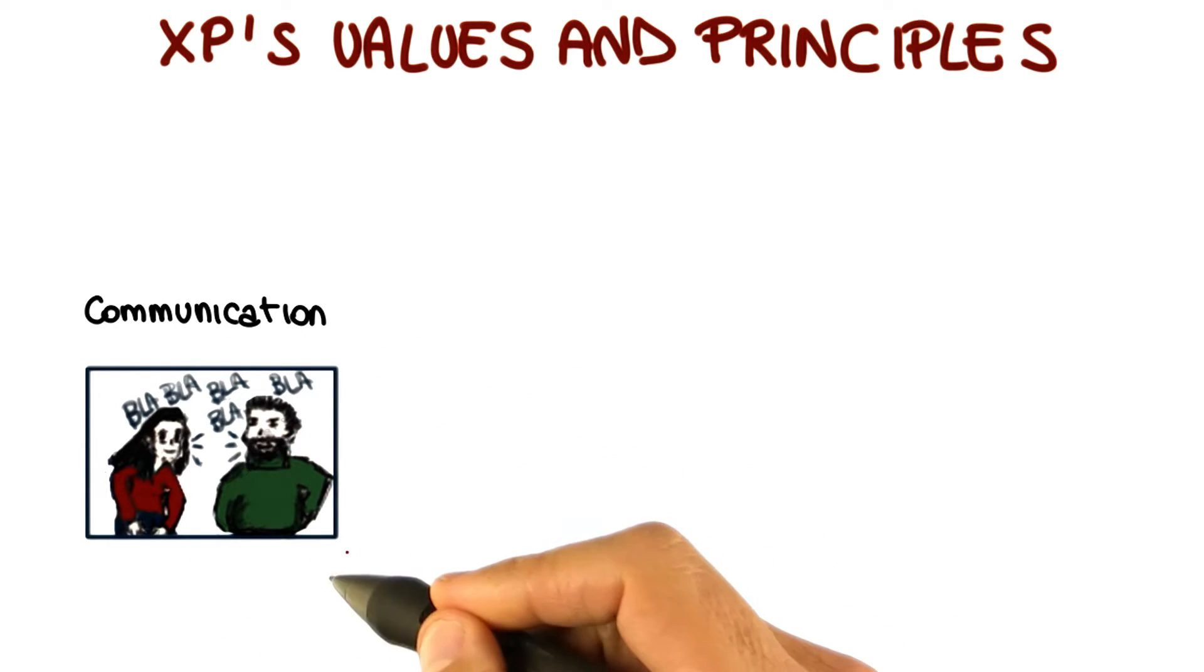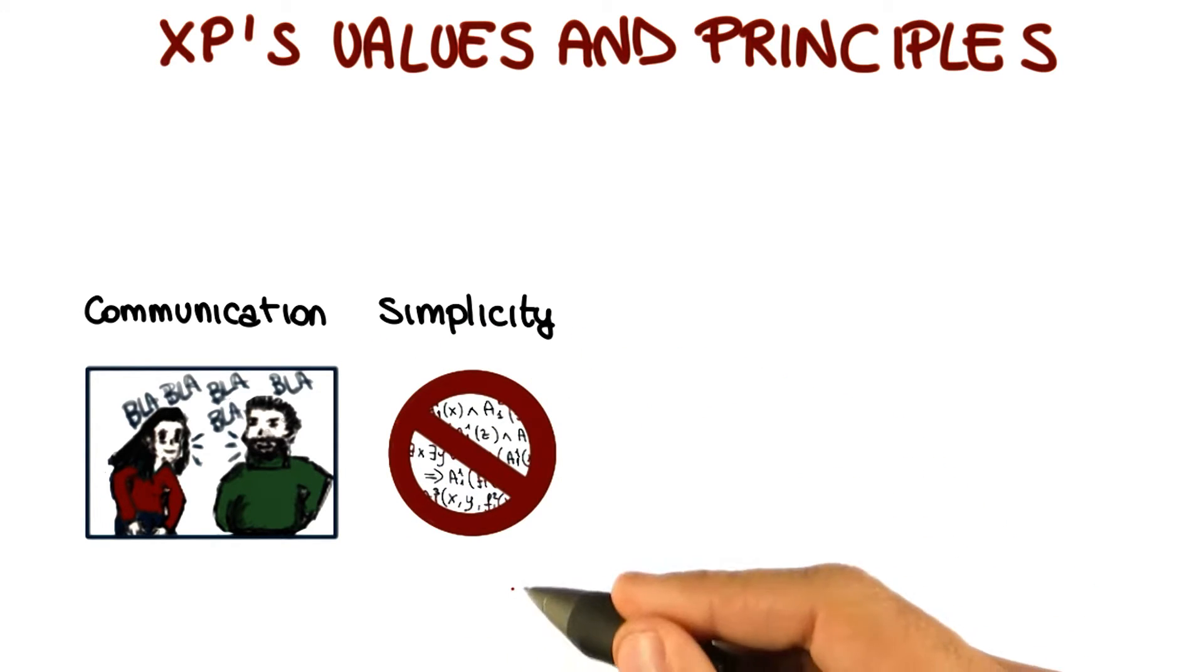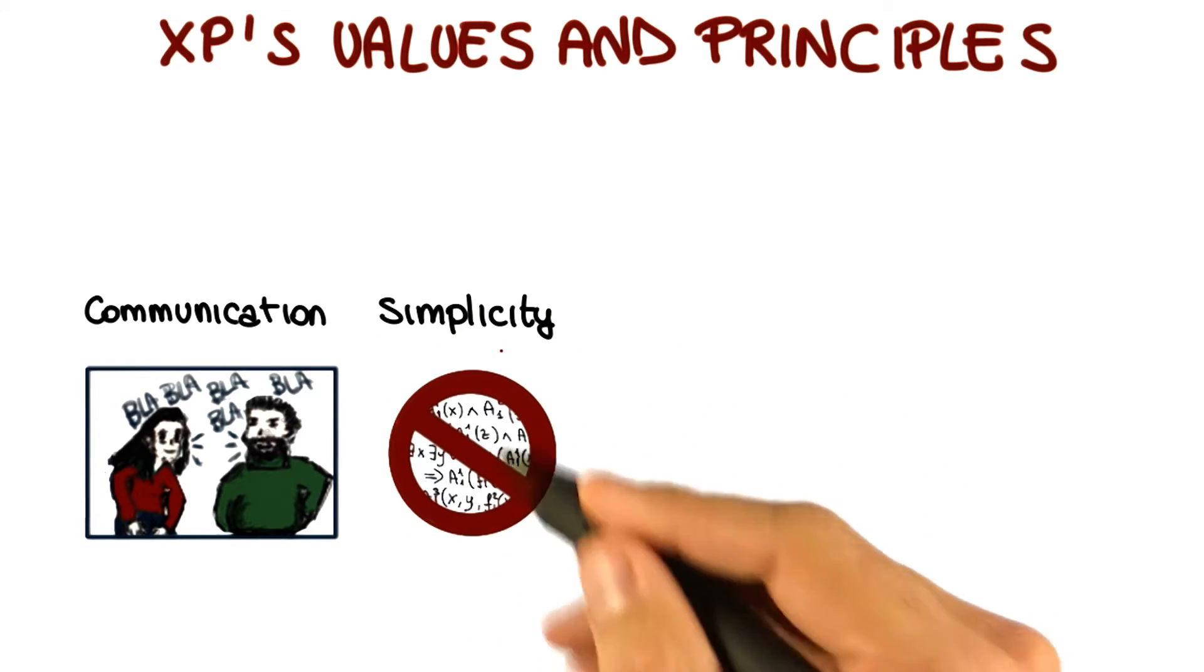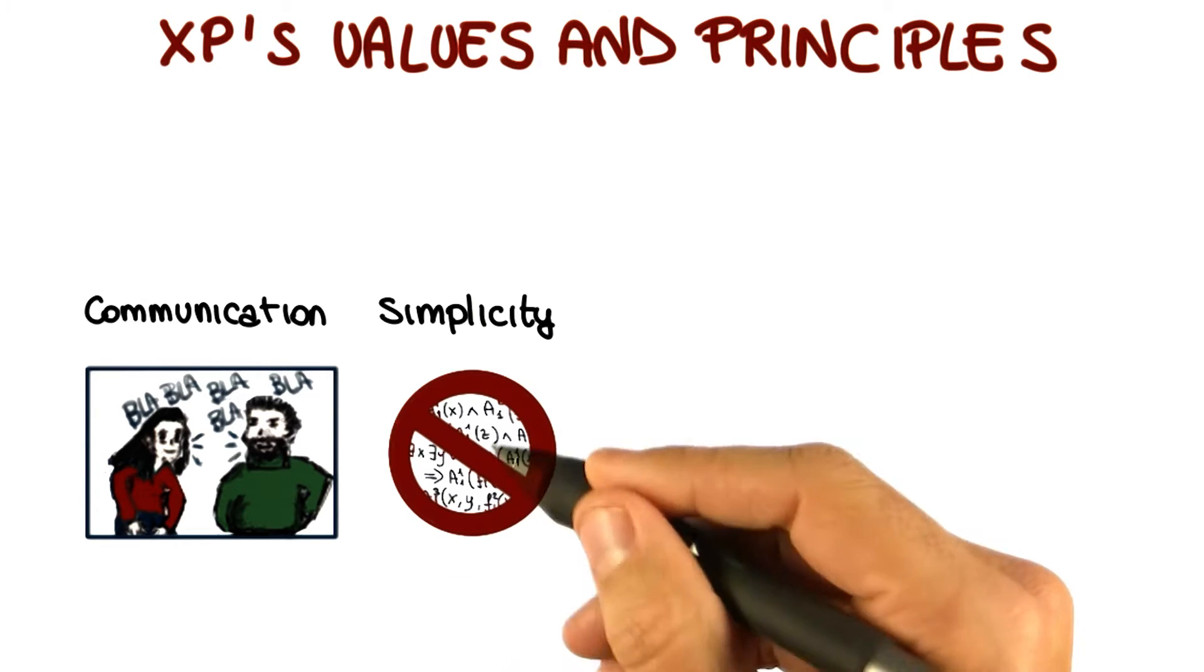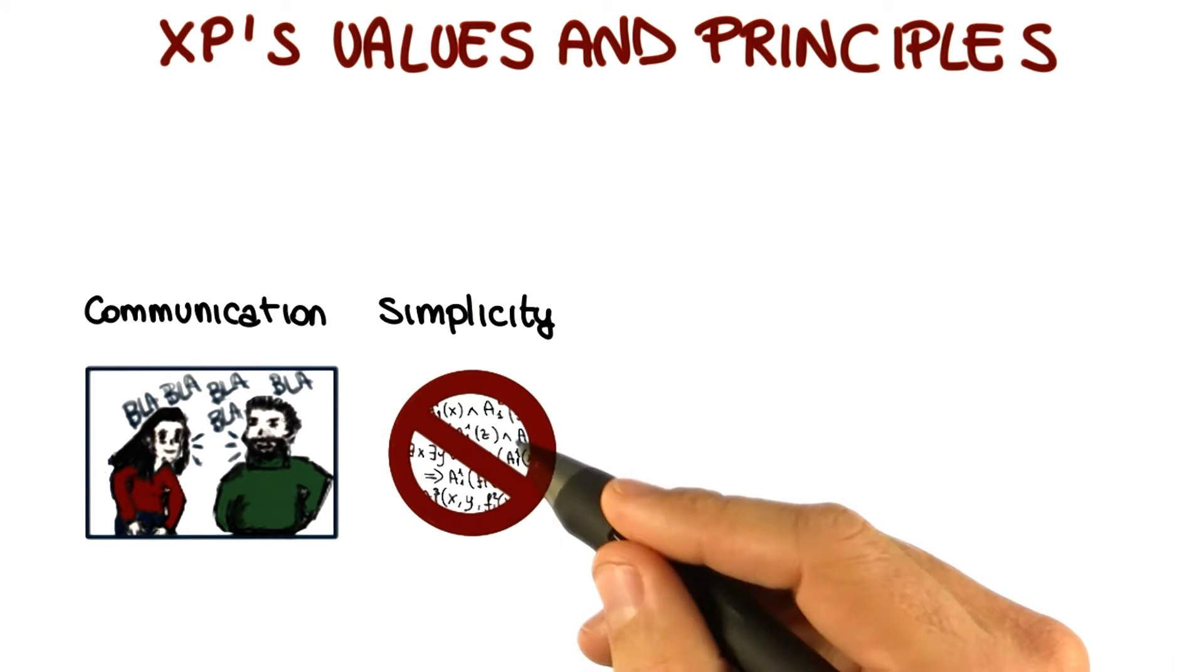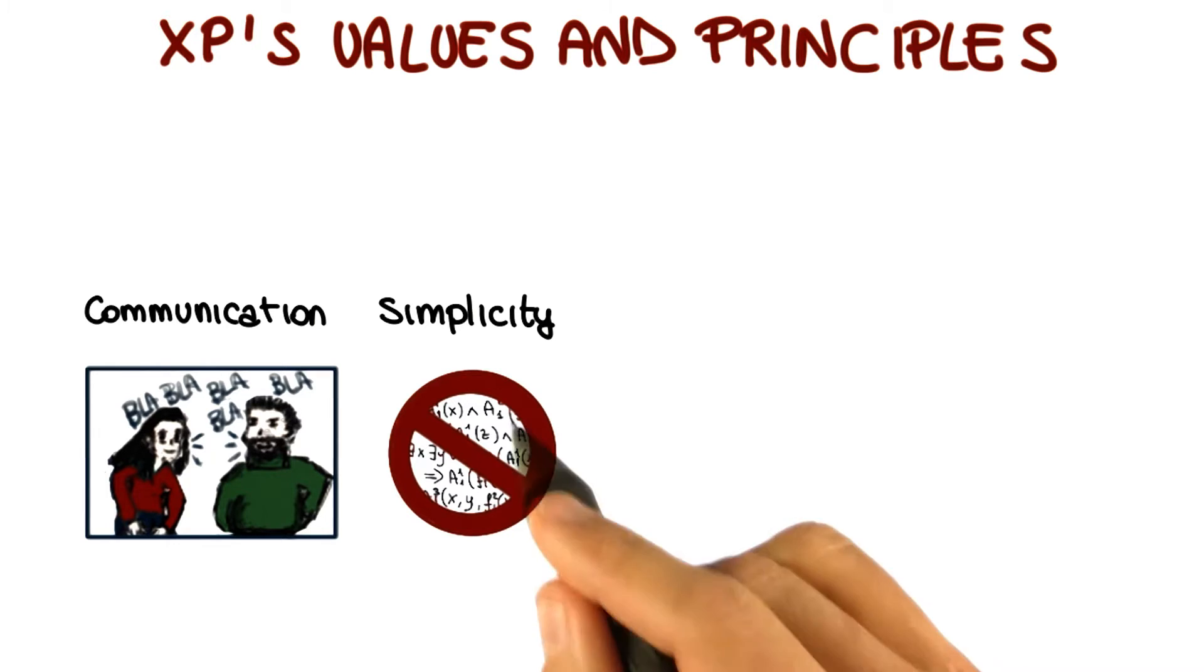Another important principle that we already saw is simplicity. And the model here is live for today without worrying too much about the future. When you have to do something, look for the simplest thing that works. And the emphasis here is on that works. We want to build something simple, but not something stupid.